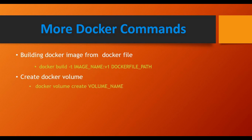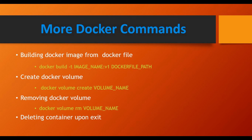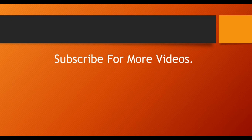To create a Docker-managed volume, use docker volume create <volume_name>. Volumes are stored under /var/lib/docker/volumes. To remove a volume, use docker volume rm <volume_name>. Additionally, docker run --rm will automatically delete a container once you exit from it — useful when you want to run a temporary container that cleans itself up after use.